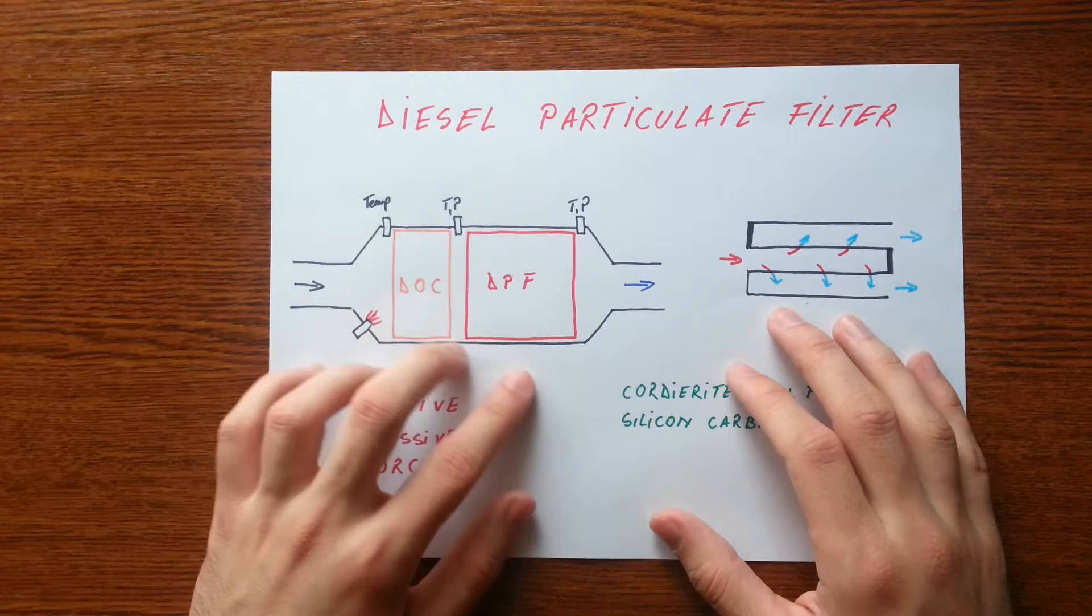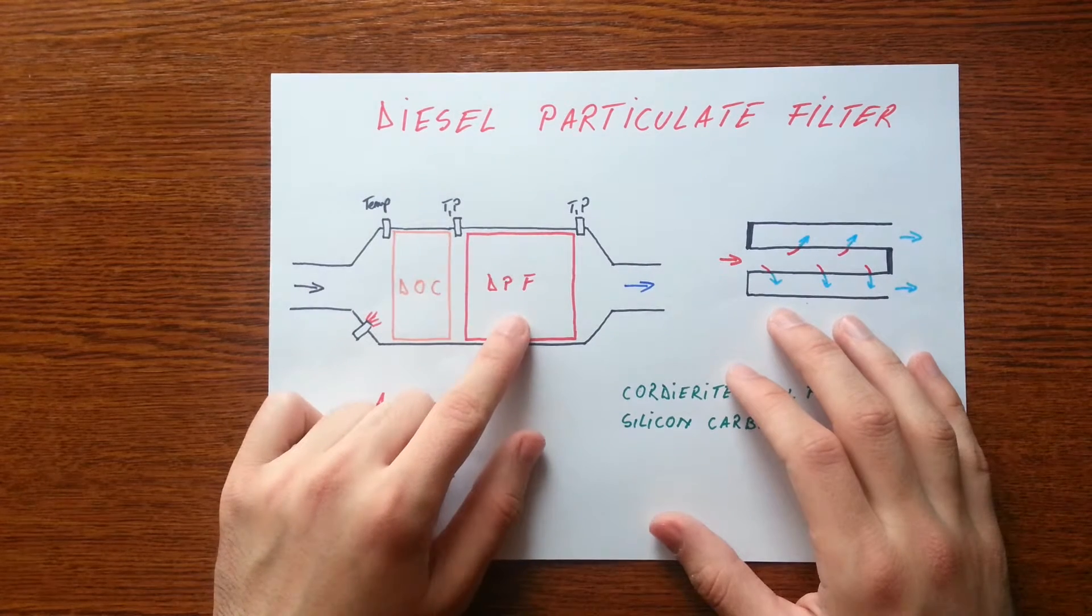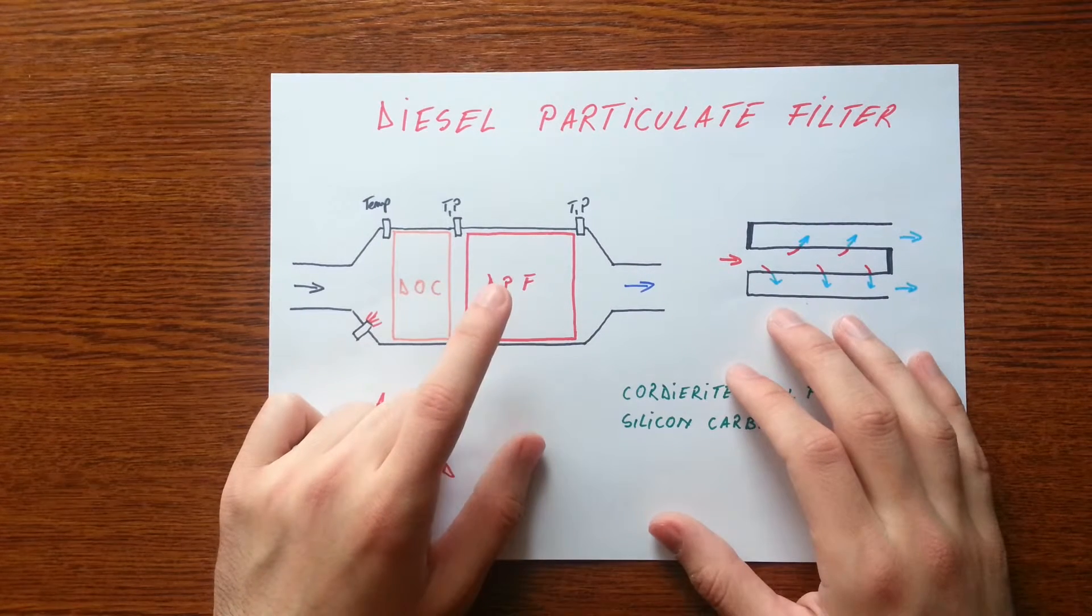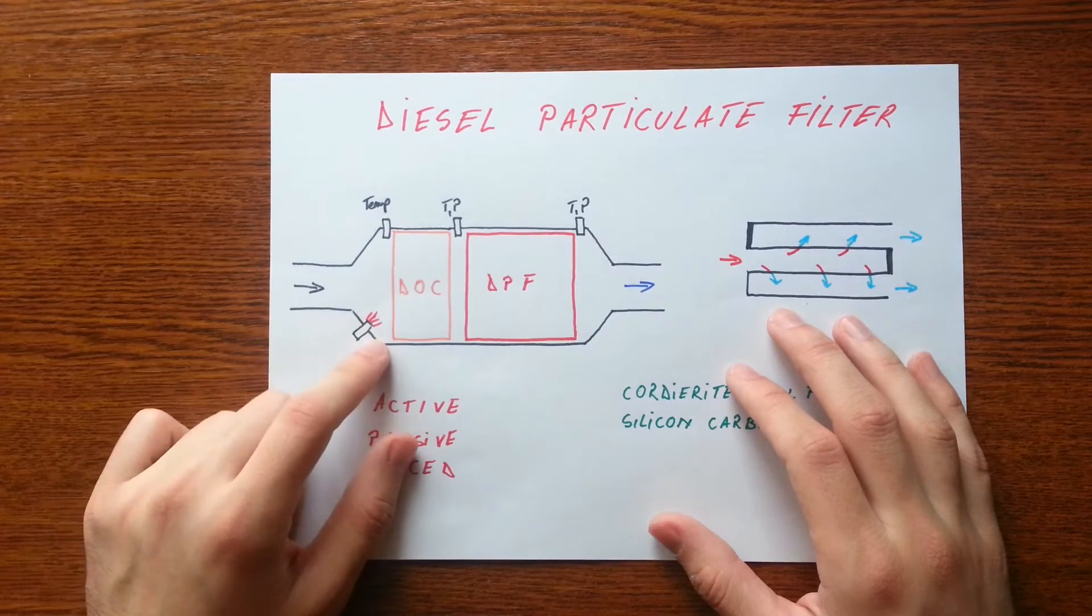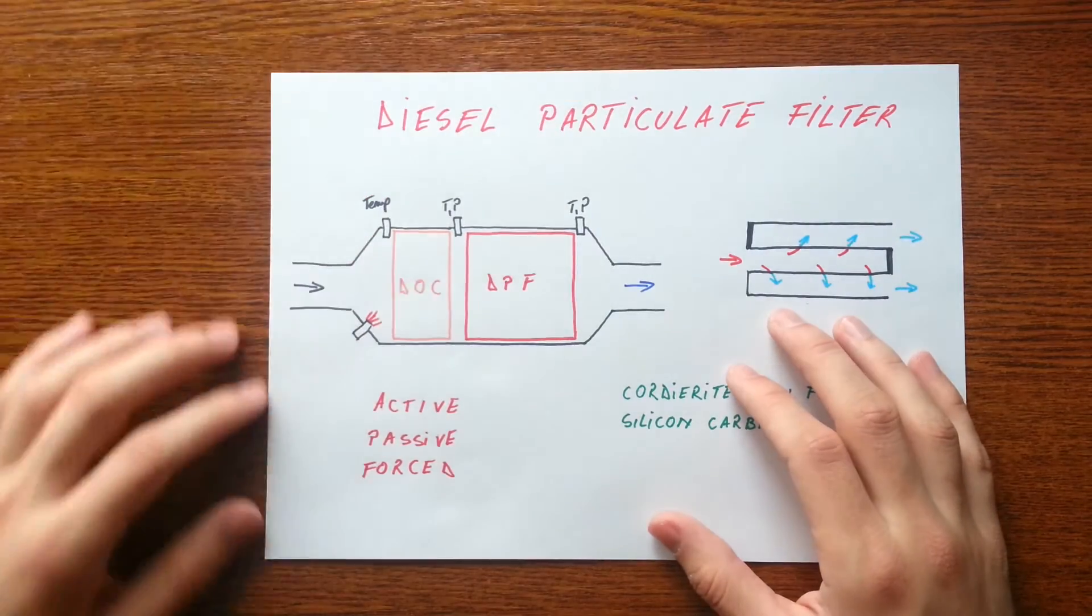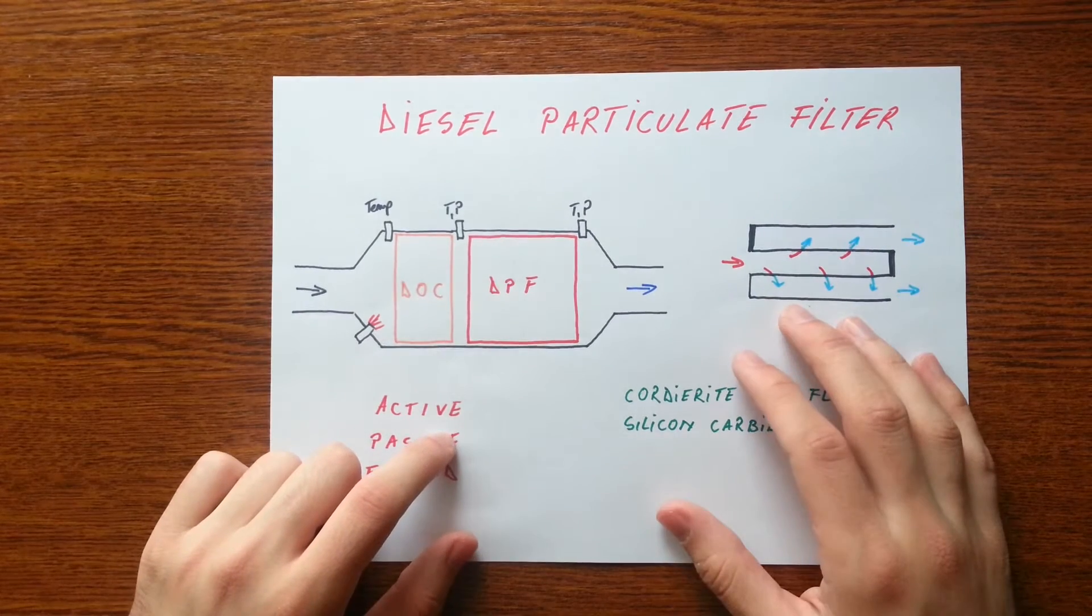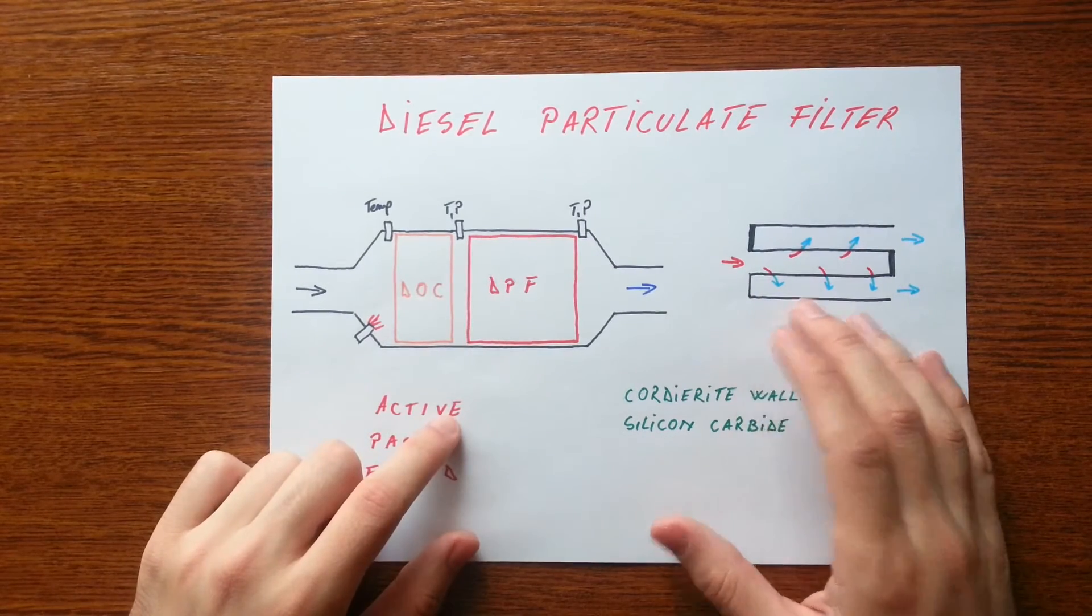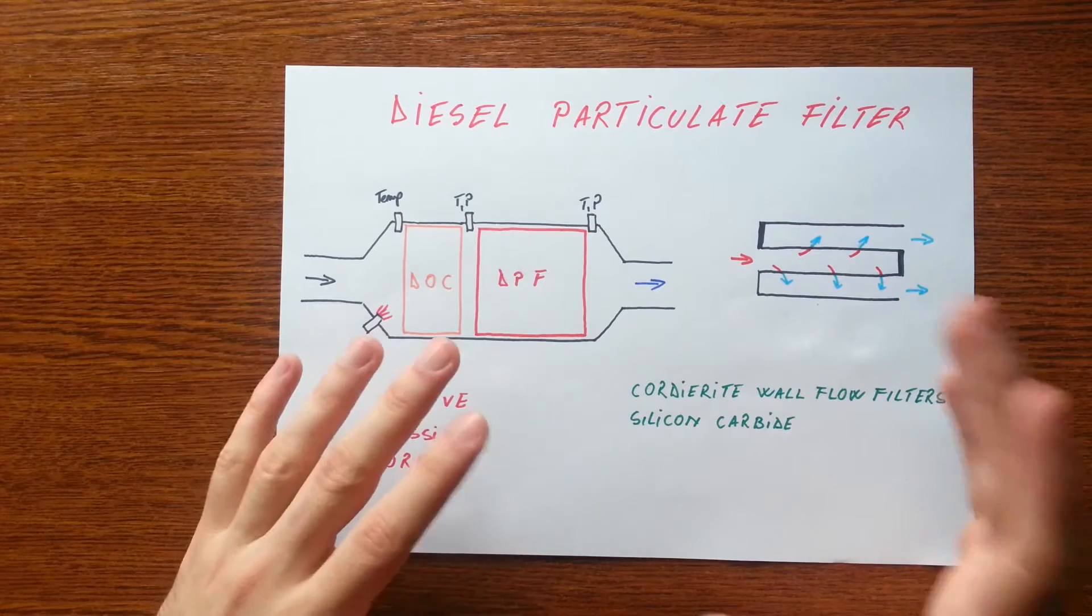This regeneration process means continuation of the combustion process inside the filter, and it can be done in two ways: using a fifth injector mounted before the catalytic converter or on the exhaust manifold, or to divide the fuel injection and delay post-injection.